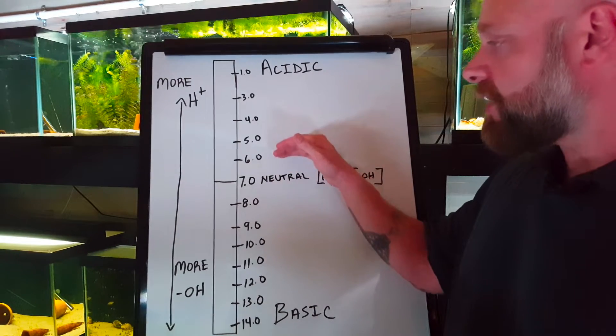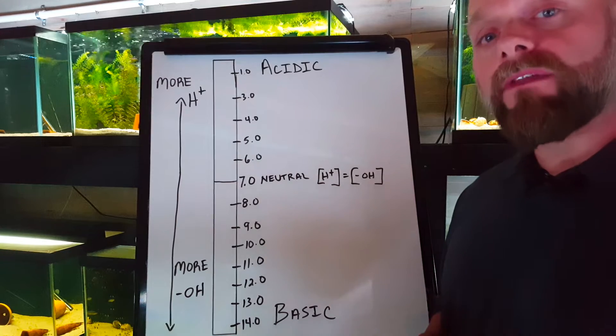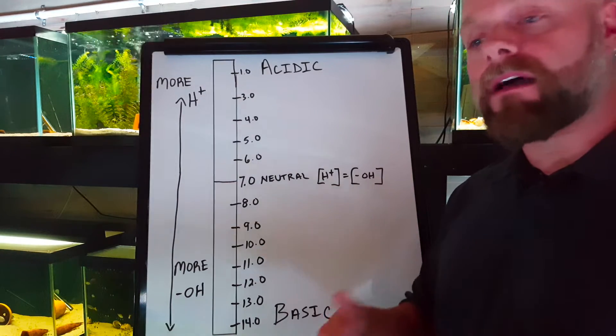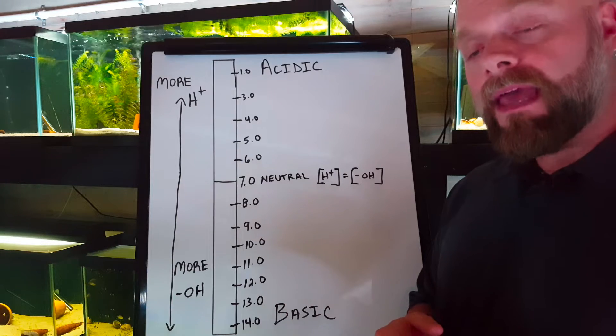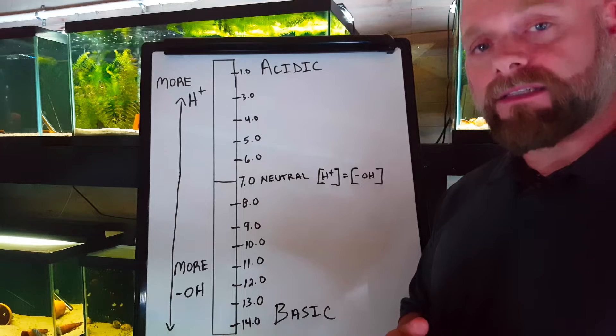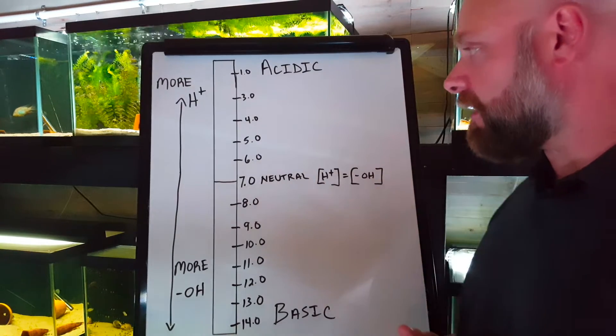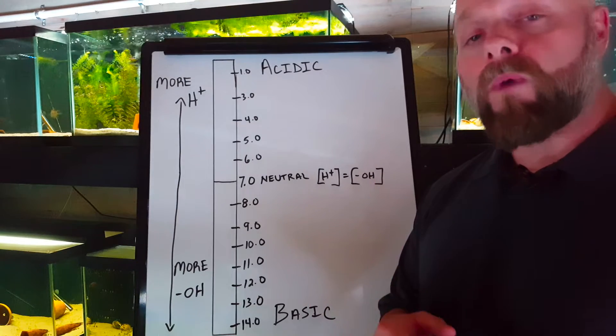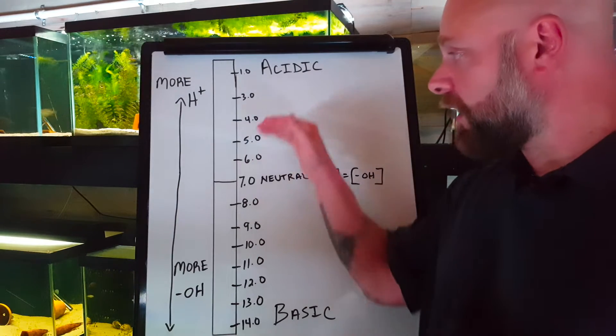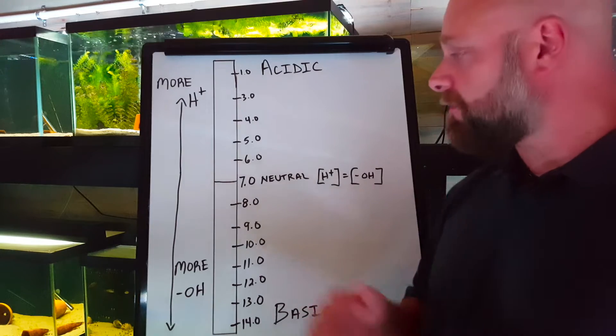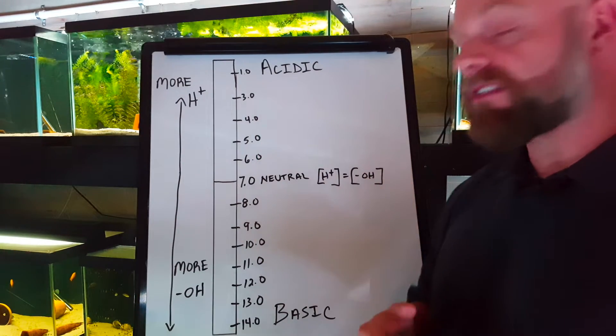As we get lower in pH into the sixes, fives, maybe even the fours, that's some of our South American cichlids that have a lot of dissolved organic matter. And that dissolved organic matter, as it breaks down, creates acids. Some of these fish might be found around a pH of four, pH of five. That might be some of your apistos. Some of your wild caught angelfish would enjoy a pH somewhere in that four to five range. Some tetras from South America might like that pH right around six or so.